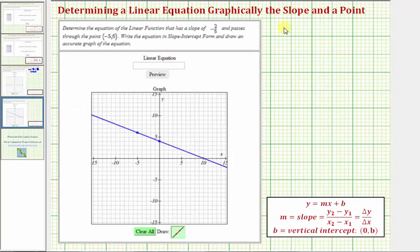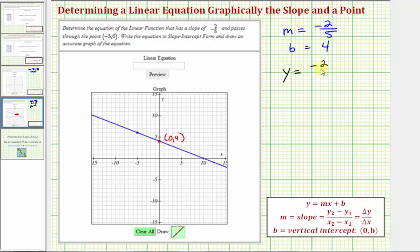Again, we were given slope m is equal to negative 2 fifths. And now graphically, we can determine that the vertical intercept, or y intercept, is this point here, which has coordinates 0 comma 4, and therefore b equals 4. This is all we need to write the equation of our line in slope-intercept form. The equation would be y equals negative 2 fifths x plus 4.